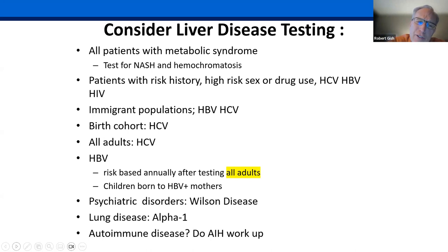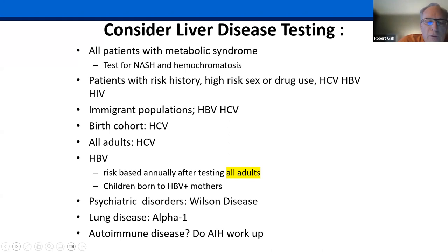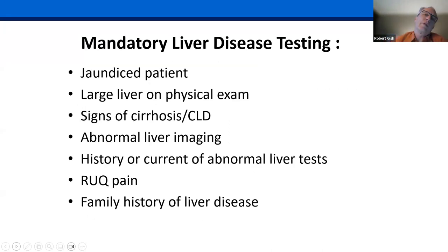Some things have changed — we're testing everybody for hepatitis C and hepatitis B; that's standard of care. Every patient needs a hepatitis C antibody and hep B triple panel. Anybody with HIV, immigrant populations, metabolic syndrome, psychiatric disorders, Wilson disease workup, lung disease, alpha-1 workup, high globulins, unexplained liver tests, autoimmune disease — this is our short list. Anybody who's jaundiced, with an abnormal liver on physical exam, signs of cirrhosis, abnormal liver imaging, right upper quadrant pain, or family history of liver disease are all triggers.